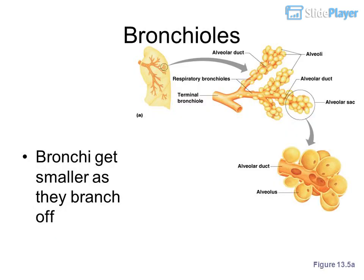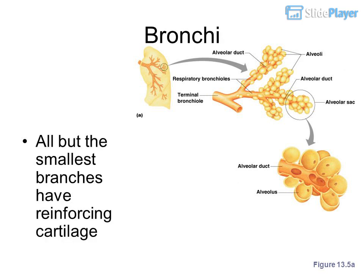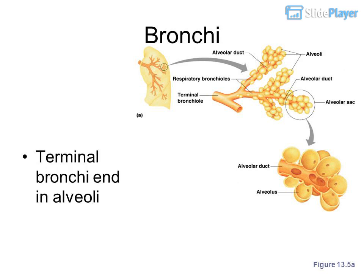Bronchioles are branches of the bronchi that get smaller as they branch off. All but the smallest branches of the bronchi have reinforcing cartilage. Terminal bronchioles end in alveoli.